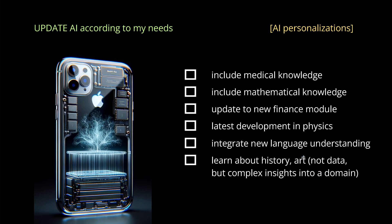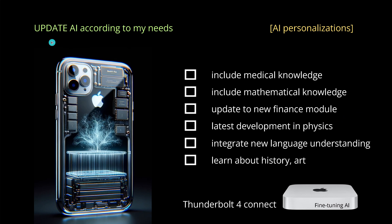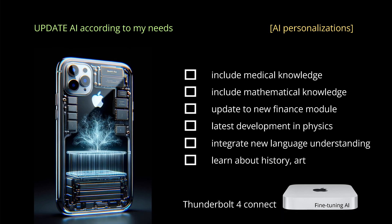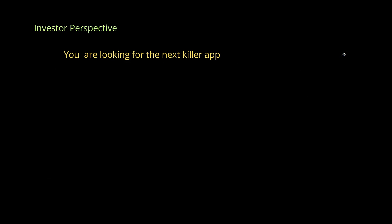To be able to do these updates, I understand that on a phone you can only run inference models. But there's something like a Thunderbolt 4 connector, and something small — like a Mac Mini, not sponsored — and you just connect your phone to a Mac Mini. Overnight, the Mac Mini fine-tunes your private AI to include new knowledge modules. You can do this today on a GPU cluster, so maybe in one or two years we can do this on any iPhone.